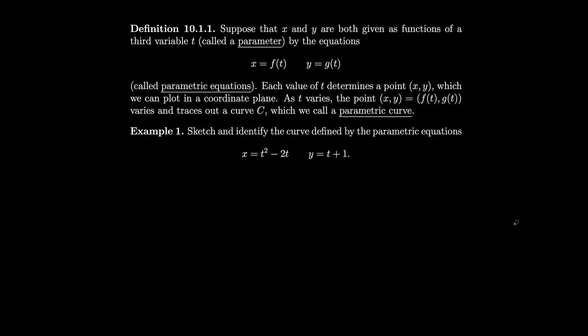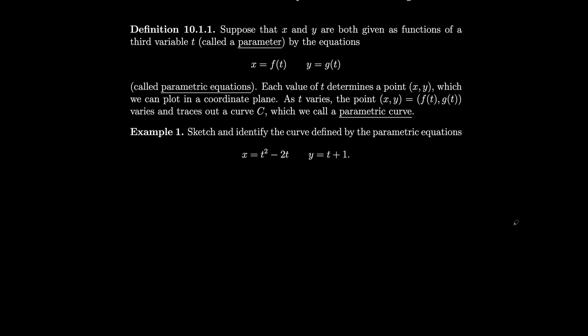Let's sketch and identify the curve defined by the parametric equations x equals t squared minus 2t and y equals t plus 1. In order to do this, let's take a look at what each individual point becomes for different values of t. We've got our t values, our x values which are some function of t, and our y values.